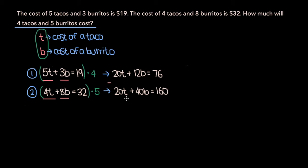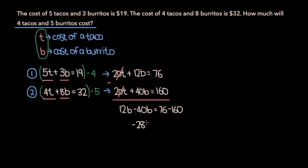Subtracting equation 2 from equation 1, the T terms cancel — 20T minus 20T — and we get 12B minus 40B equals 76 minus 160, which is negative 28B equals negative 84. Dividing by negative 28 on both sides, we get B equals negative 84 divided by negative 28, which is 3. So B, the cost of a burrito, is $3.